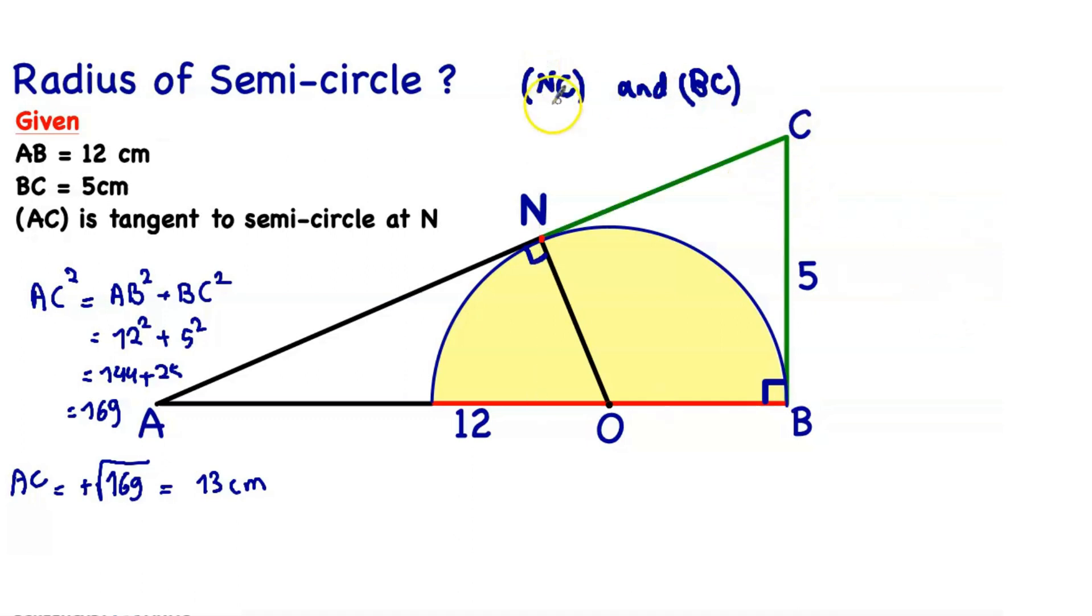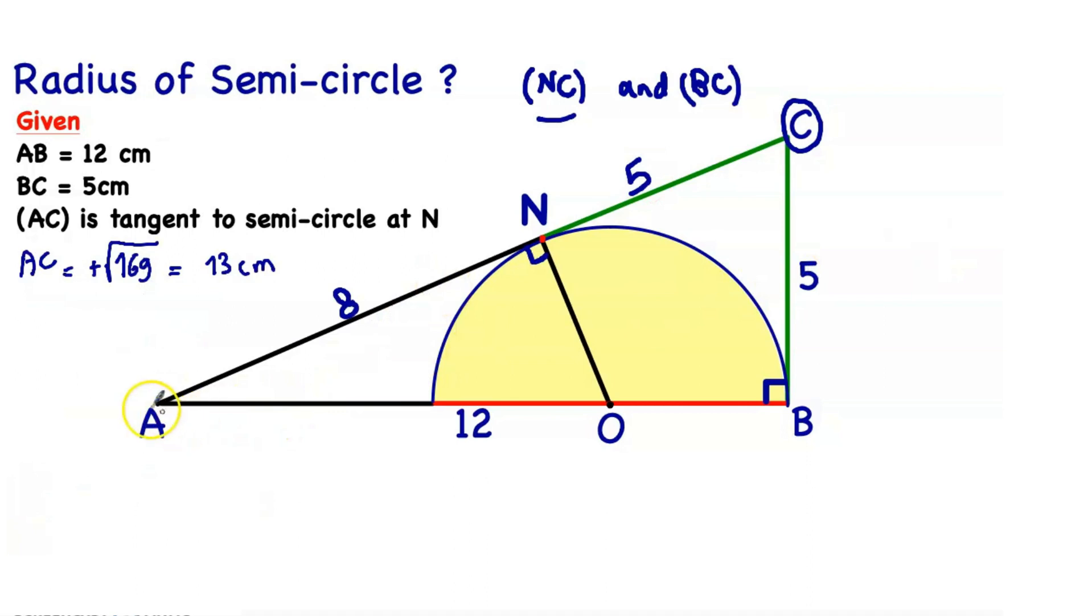In geometry, two tangents drawn from the same point to the same circle are equal. So in this case, BN equals BC, equals 5 units. We know that AC equals 13, so AN equals 13 minus 5, equals 8.